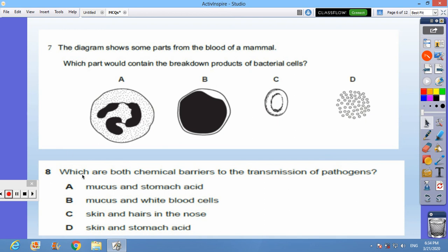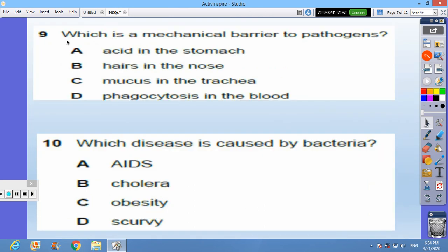Question 8: which are both chemical barriers to the transmission of a pathogen? The answer is A, mucus and stomach acids.